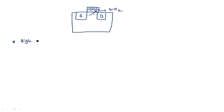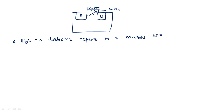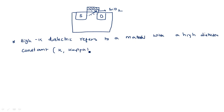High-k dielectric refers to a material with a high dielectric constant — K is nothing but kappa — as compared to silicon dioxide.